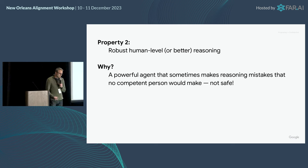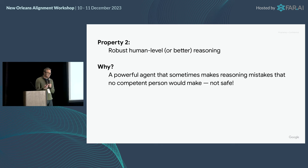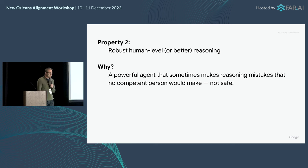Property two, very related to the previous one: you want robust human-level or better reasoning. The same kind of argument applies — if you've got a powerful agent and it sometimes makes reasoning mistakes, that's not safe.